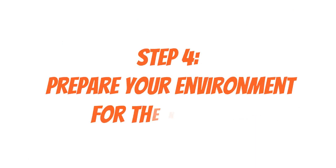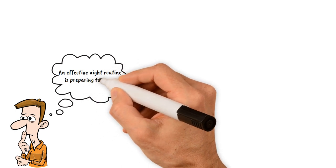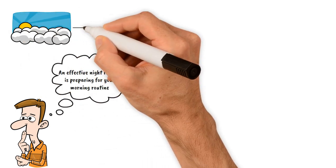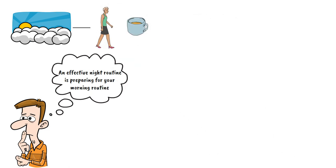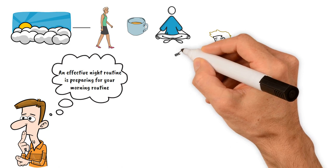Step 4: Prepare your environment for the next day. A crucial aspect of an effective night routine is preparing for your morning routine. If your ideal morning includes activities like taking a refreshing walk, enjoying a cup of coffee, and meditating, it's essential to get everything ready the night before. This simple step will set you up for a smoother and more productive morning.